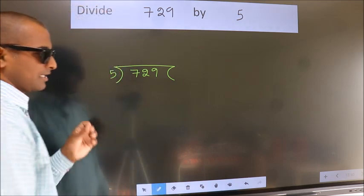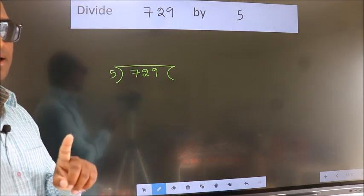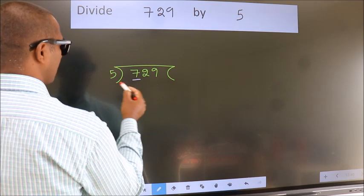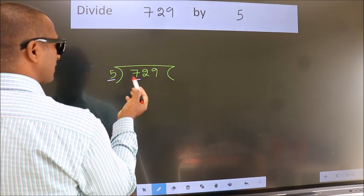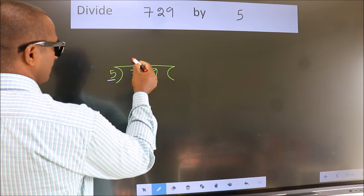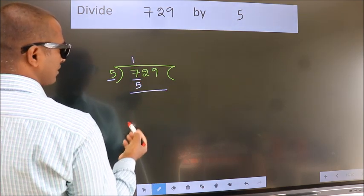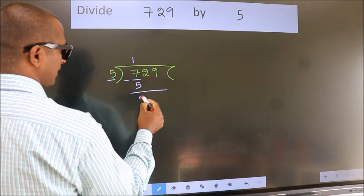This is your step 1. Next, here we have 7, here 5. A number close to 7 in 5 table is 5 once 5. Now, we should subtract. We get 2.